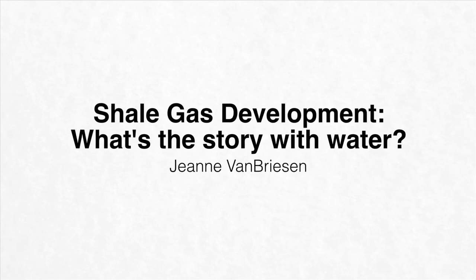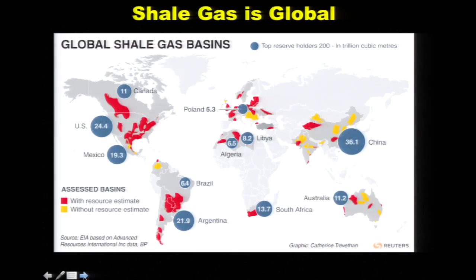To start off with shale gas, it is very easy if you live here in southwestern Pennsylvania to think that we are the center of the world on shale gas. But shale gas is a global phenomenon, and this image shows some of the resources we know about. The very light gray areas are where we just don't know. Just about everywhere we've looked, we do have shale gas resources. There is a major resource in shale gas on the planet and that is likely to change how we deal with our energy resources.